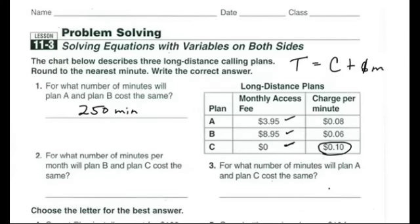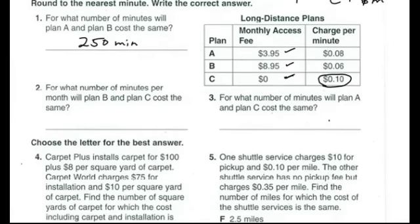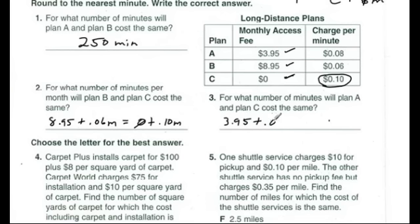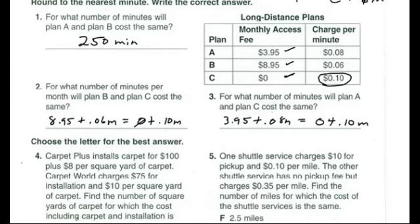For numbers 2 and 3, you're basically doing the same thing with different plans. For number 2, plan B is $8.95 + 0.06 per minute, set equal to plan C which is 0 + 0.10 per minute — solve for M. For number 3, make plan A equal to plan C: $3.95 + 0.08 per minute equals 0 + 0.10 per minute, and solve for M. That way, a business can figure out the better deal depending on how many minutes they expect to use.